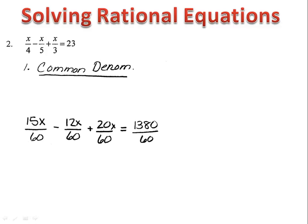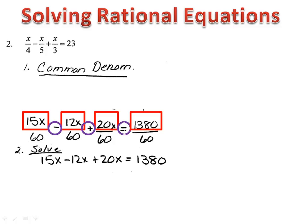Let's see how you did. We began by getting a common denominator. Our common denominator is 60. Now, what we do is we simply look at the numbers on the top. We write our equation and we solve that to get x equals 60.